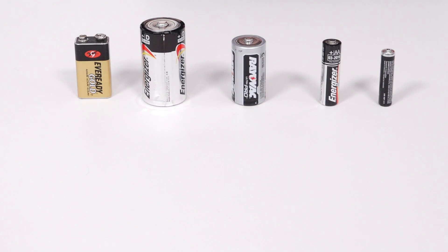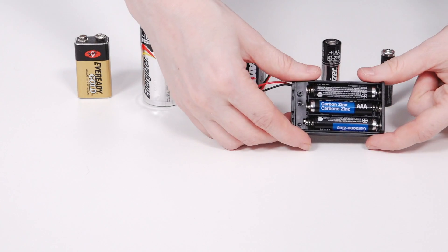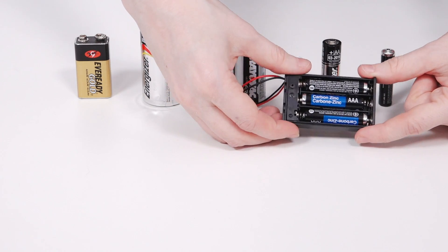And speaking of series, because alkaline and nickel metal hydride batteries are about 1.5 volt nominal, you can add them together in series to create higher voltage battery packs, like this three triple A battery pack which will give you a nominal voltage of 4.5 volts.